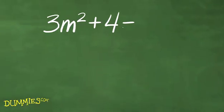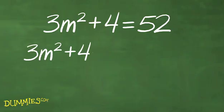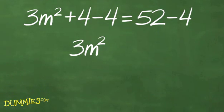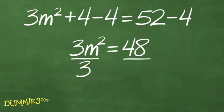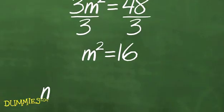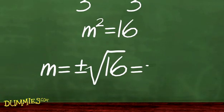Here's another one. Solve for m in 3m squared plus 4 equals 52. This one isn't quite ready for the square root rule. First you have to add minus 4 to each side, so 3m squared equals 48. Now divide each side by 3 and m squared equals 16. So m equals plus or minus the square root of 16, which is plus or minus 4.